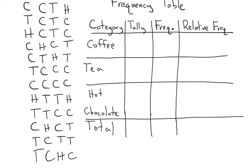Let's talk about the different columns. We have the category column — that's all the different categories that our data can be in. We have the tally column, which is just for working. Every time we ask somebody and they say something in that category, we put a little mark there. So, for example, the first person's favorite drink is coffee, the second person's is tea, the third is hot chocolate, the fourth is also coffee, and the fifth is also coffee. So these first five marks represent the first five people in our list.